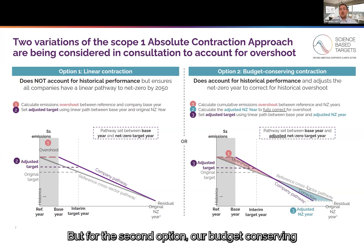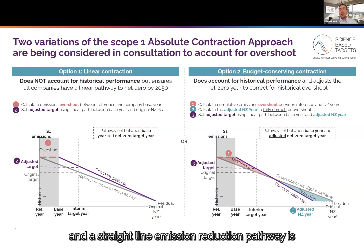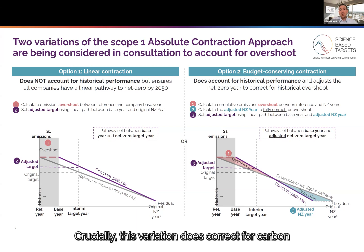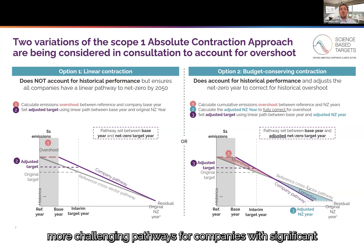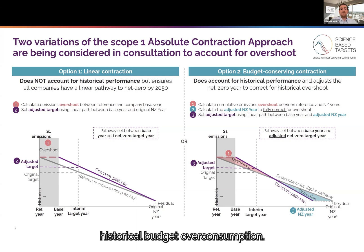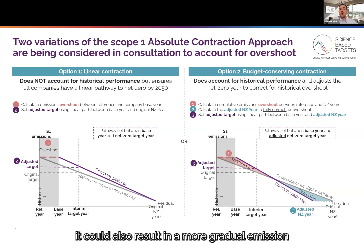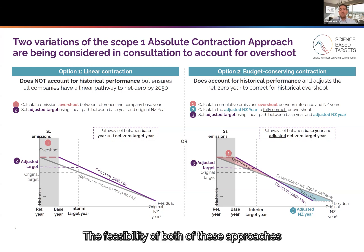For the second option, our budget-conserving contraction approach, the net zero year is shifted forward, potentially earlier than 2050, and a straight-line emission reduction pathway is drawn from the base year to the net zero year. Crucially, this variation does correct for carbon budget overconsumption caused by having a later base year than the reference year, or caused by underperformance in the previous target cycle. This may result in significantly more challenging pathways for companies with significant historical budget overconsumption. However, if companies perform well in previous target cycles, it could also result in a more gradual emission reduction pathway and reward earlier action. The feasibility of both of these approaches for different company types will be further tested as part of our consultation process.